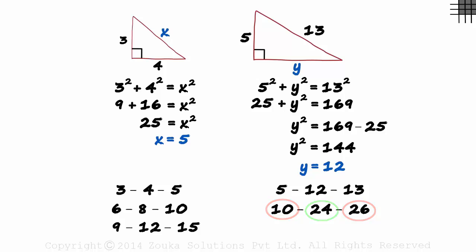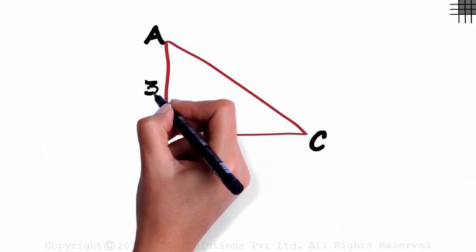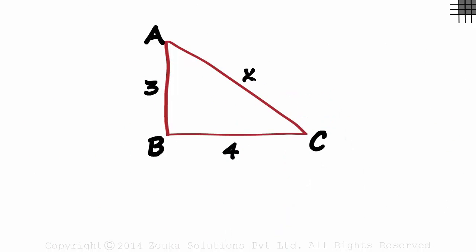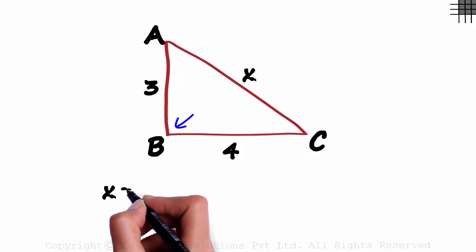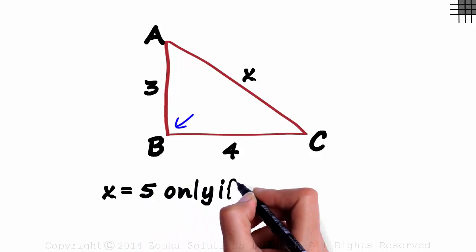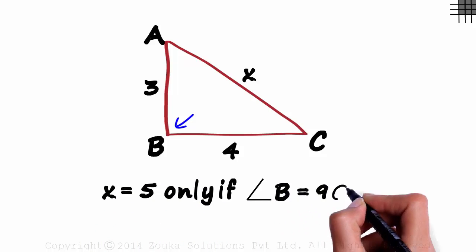But we need to be a little careful here. Let's say we have a triangle like this with sides 3, 4 and x. And we are asked to find the value of x. Do not assume x to be 5 units. Yes, we know it is a Pythagorean triple. But here we haven't been told that the triangle is right angled. X will be equal to 5 units only if the measure of angle B is 90 degrees.